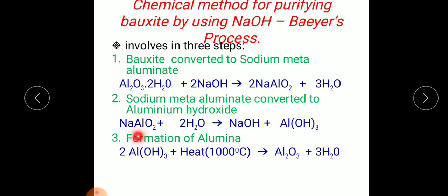Finally, this aluminium hydroxide when it is heated at a temperature of 1000 degrees Celsius, it will form aluminium oxide, or we also call it alumina, plus water. So finally we got from bauxite, alumina, which is a pure ore of aluminium.